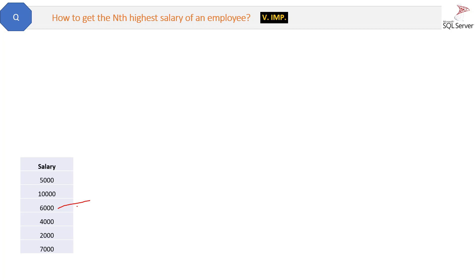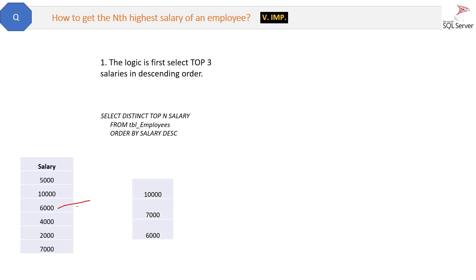If it is the third highest, first you have to select the top three salaries. You will apply this query: SELECT DISTINCT TOP N salary FROM employees ORDER BY salary descending. Salary descending means the highest salary is at the top and the third salary is at the bottom, so you will get that result.